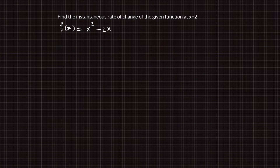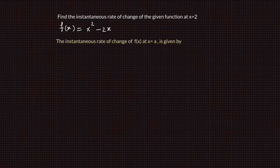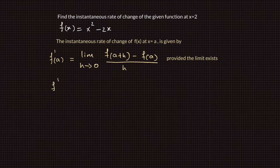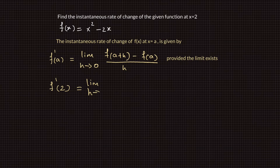Find the instantaneous rate of change of the given function at x equals 2. The instantaneous rate of change of f of x at x equals a is given by the limit of f of a plus h minus f of a divided by h as h goes to 0. This is also known as the derivative of the function f of x at x equals a, denoted by f prime of a.